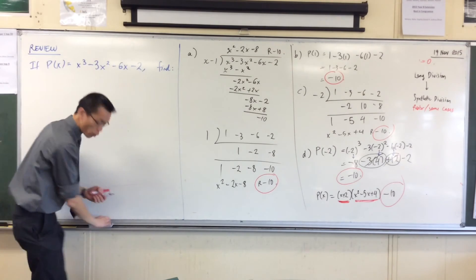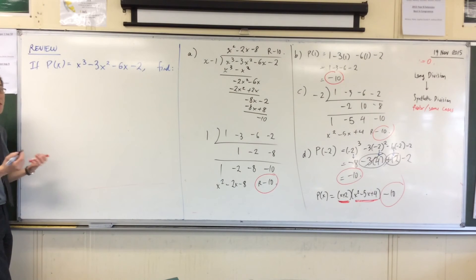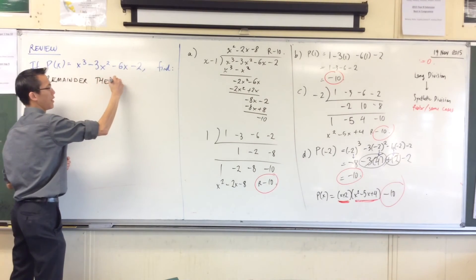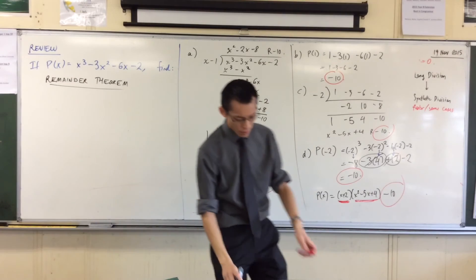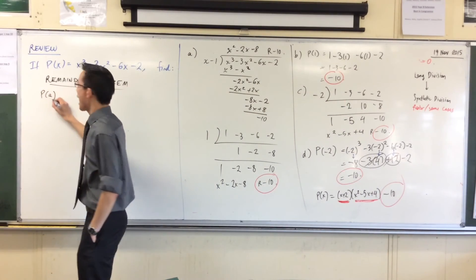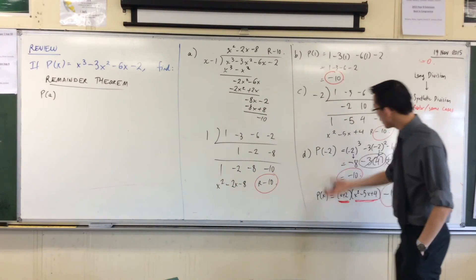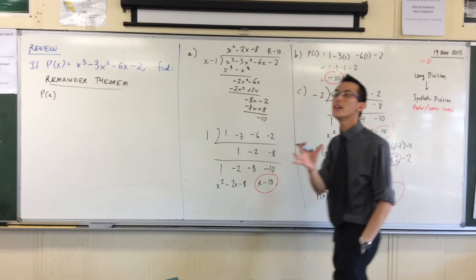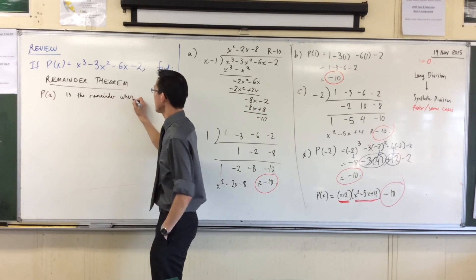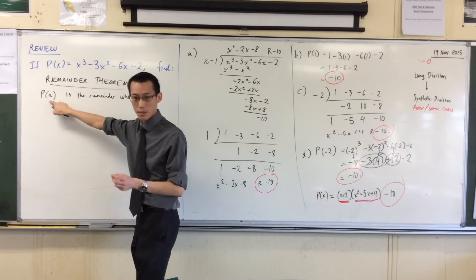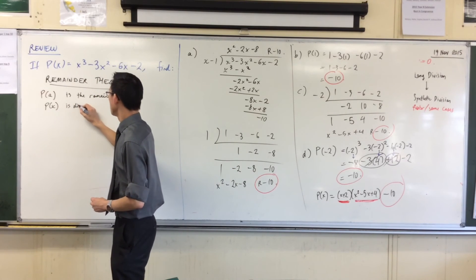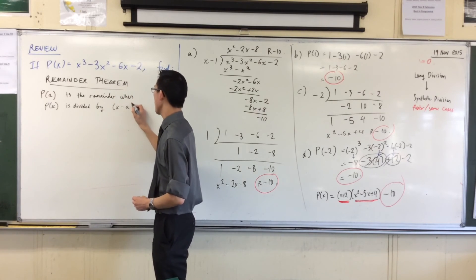This is called the remainder theorem. So write this nice and bold, put a box around it in a second once we're done. The remainder theorem is: if you have a polynomial P(x), then P(a), like a is some number like one or negative two or a hundred or pi or any number you like, P(a) is the remainder when you take that polynomial and you divide it by x minus a, take away whatever that number was.